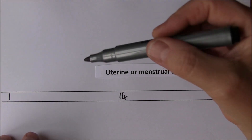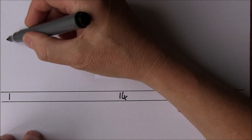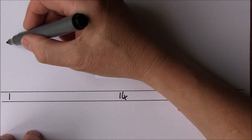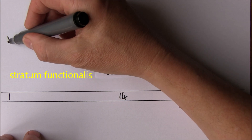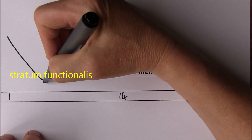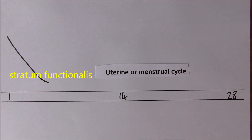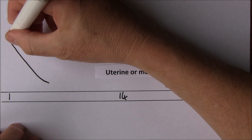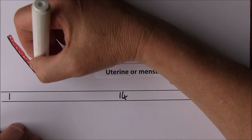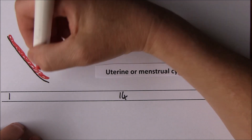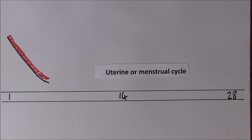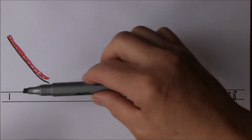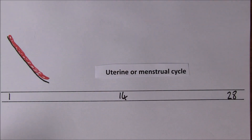Menstruation is taken as the first day of the menstrual cycle. The functional layer is going to degrade in the first few days — that is when menstruation takes place. We take day one as the first day of the menstrual cycle, the first day of menstruation, because it's the day we can be certain about — we can see it, it's obvious.